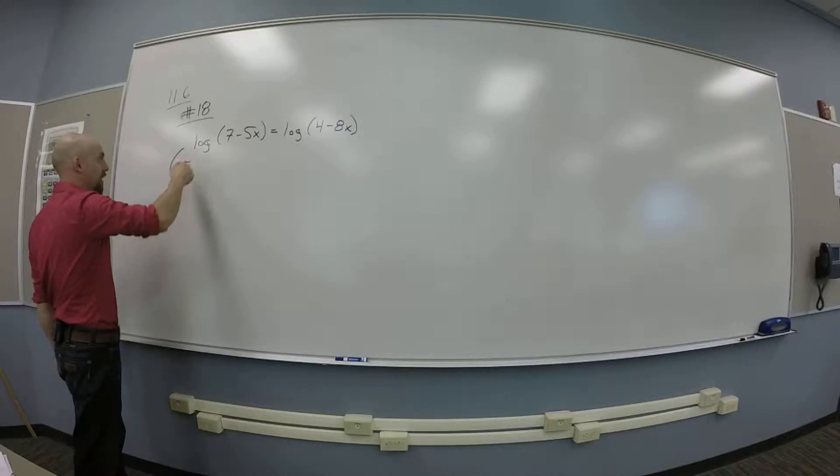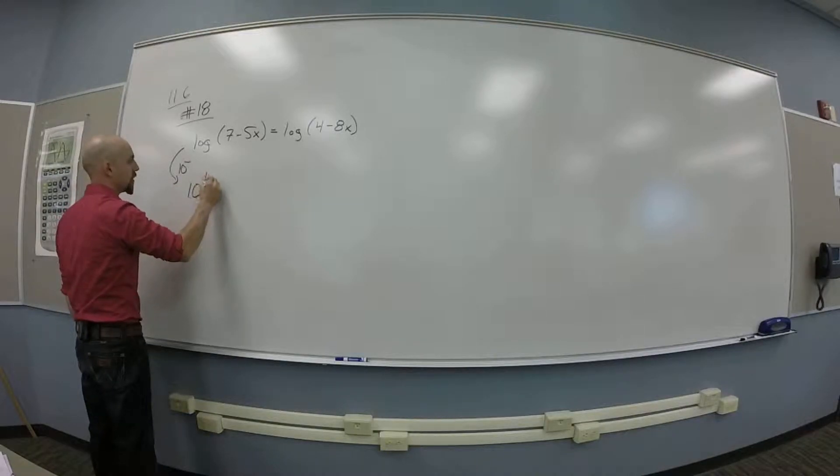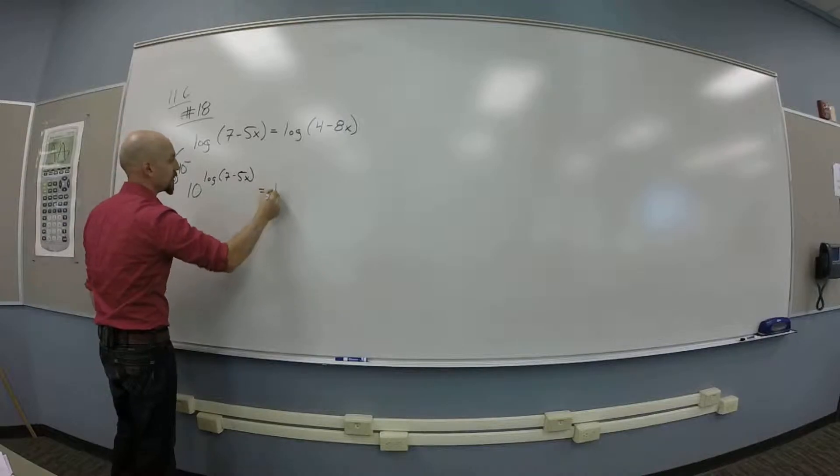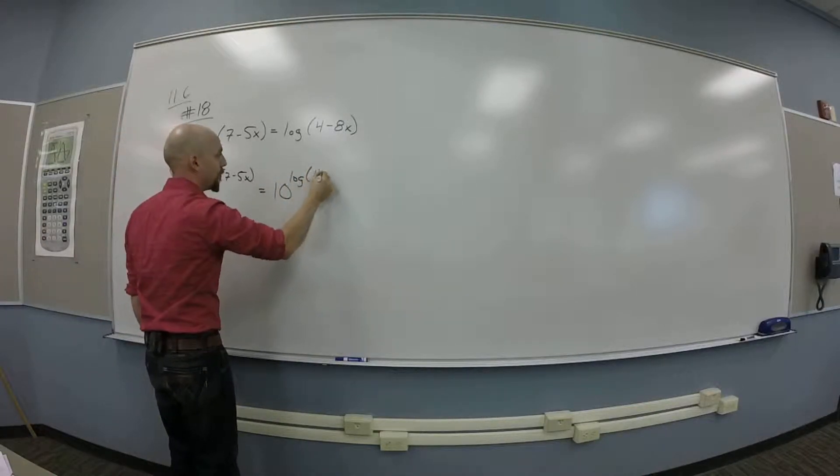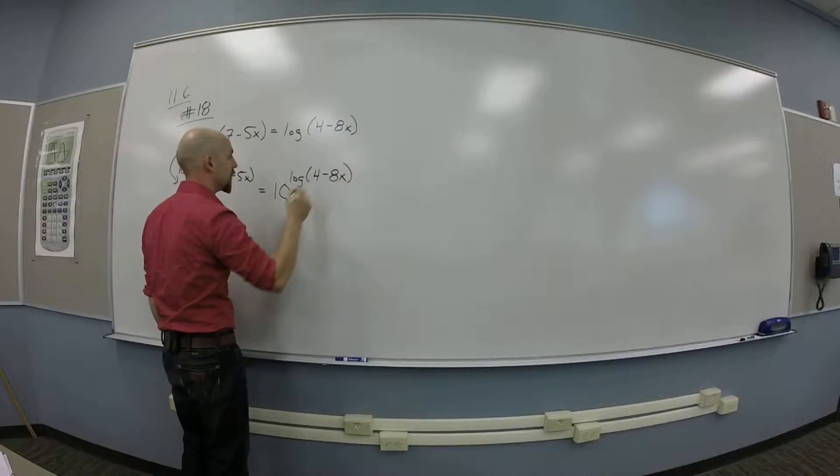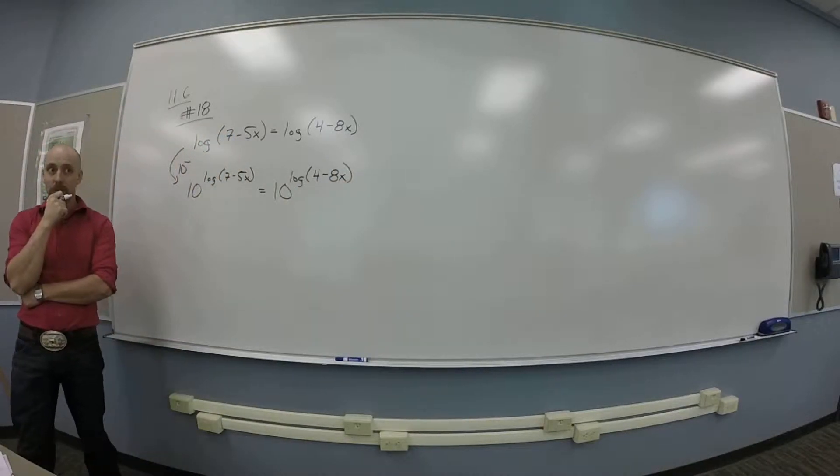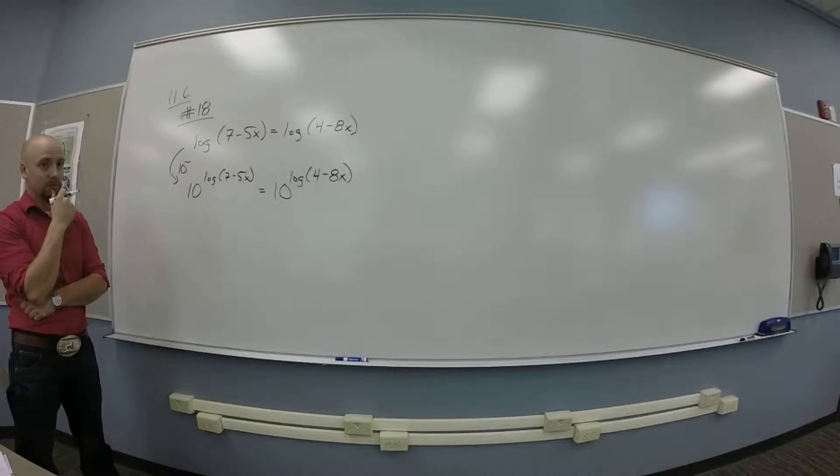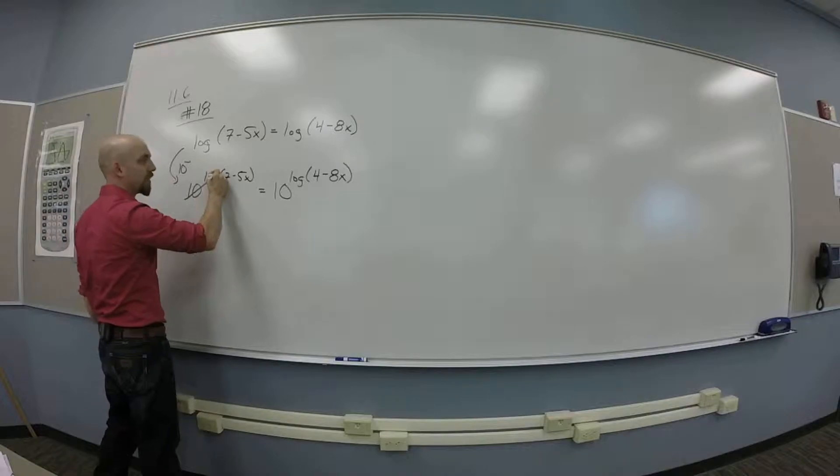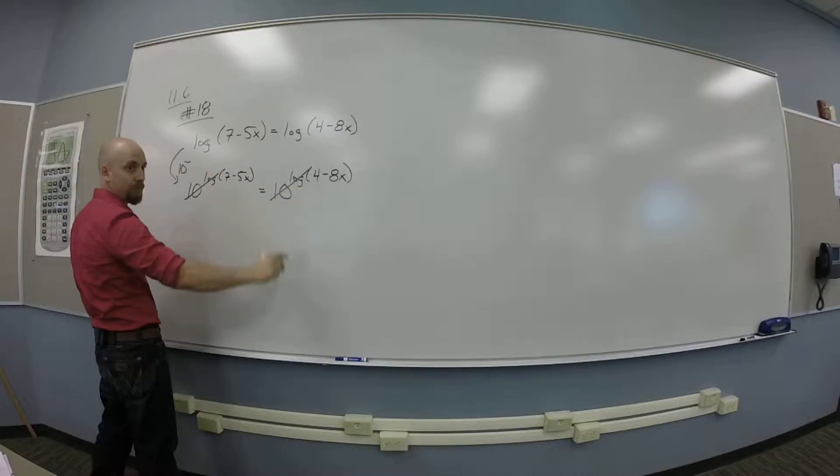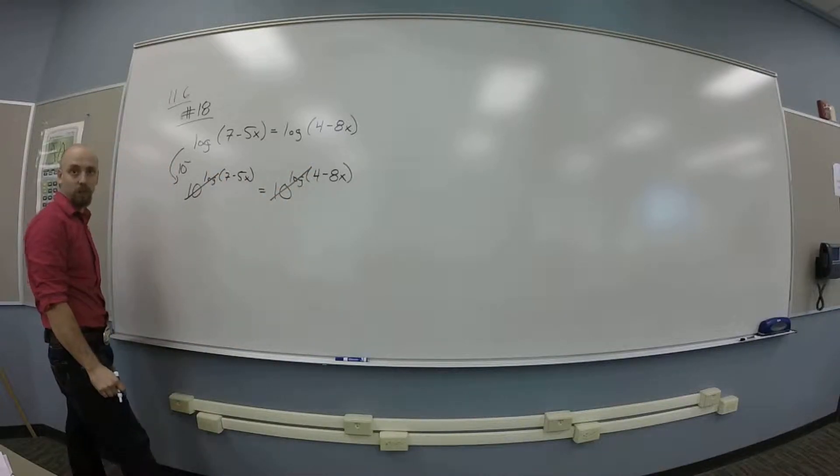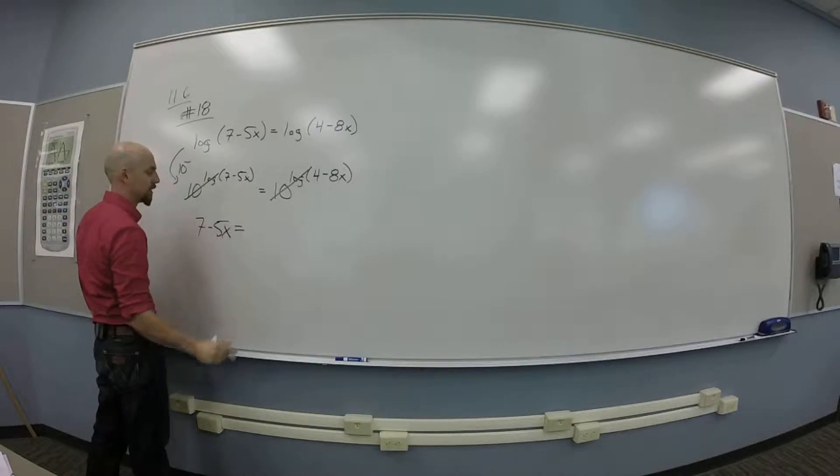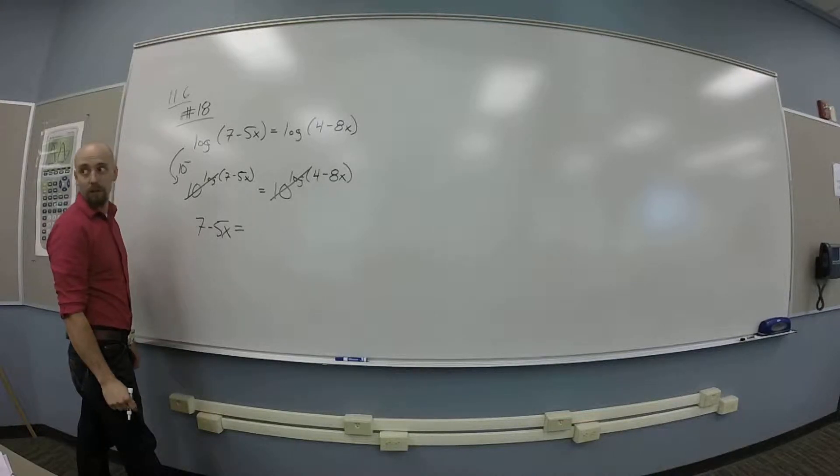So I'm raising everything to the 10th, so I get 10 to the log of 7 minus 5x is 10 to the log of 4 minus 8x. And then what? Then we will cross out the log. The 10 to the whatever and the log base 10 function undo each other. So I'm left with 7 minus 5x is 4 minus 8x.